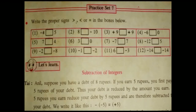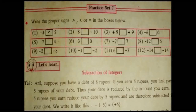Now we will begin Practice Set 7: write the proper signs — greater, smaller, or equal to — in the boxes below. First one: minus 4 and 5. Between minus 4 and 5 a box is there; you have to put the proper sign. The correct answer is the smaller sign, because negative number is smaller than positive number. Next: 8 and minus 10. The correct answer is the greater sign — 8 is greater than minus 10 because positive number is greater than negative number.